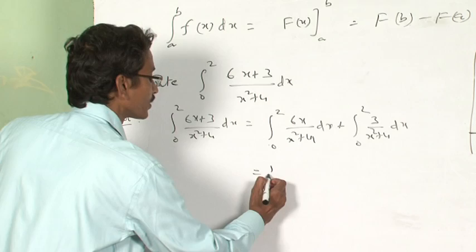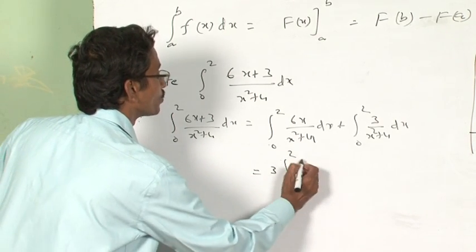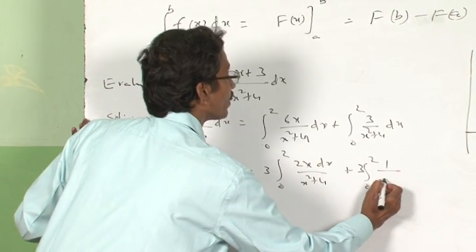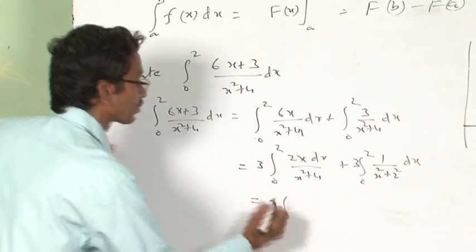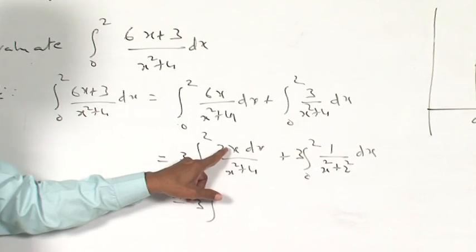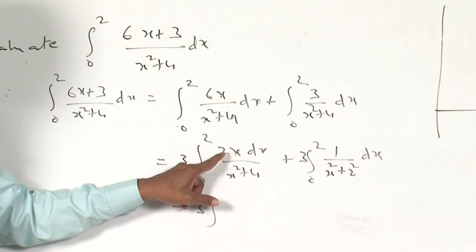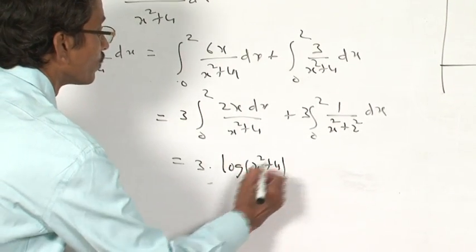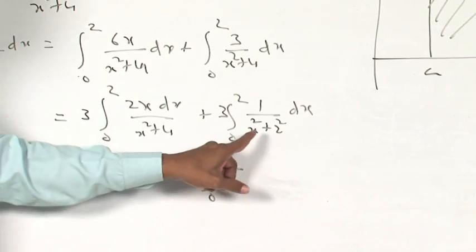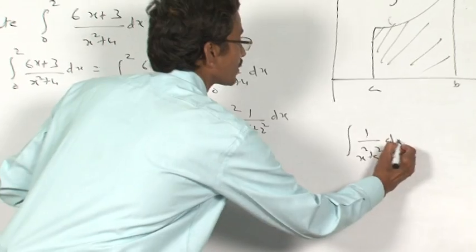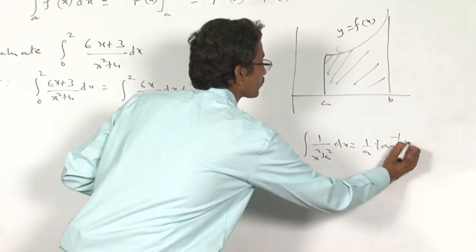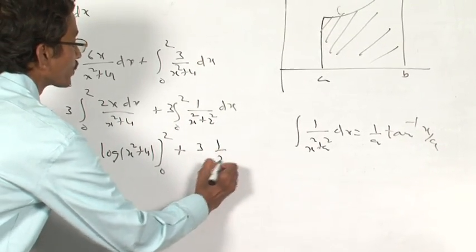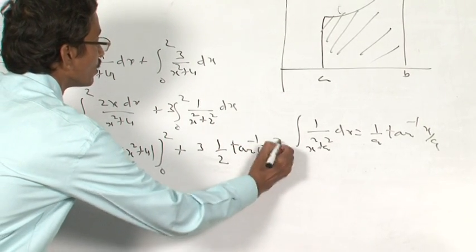The second part can be expressed as (1/3) times the integral from 0 to 2 of 6x/(x² + 2²) dx. Taking x² + 4 = t, we know that the integral of f'(x)/f(x) dx equals log(x² + 4). So the first part equals log(x² + 4) evaluated from 0 to 2. For the second part, using the formula: integral of 1/(x² + a²) dx = (1/a) tan⁻¹(x/a), this becomes 3 × (1/2) tan⁻¹(x/2) from 0 to 2.